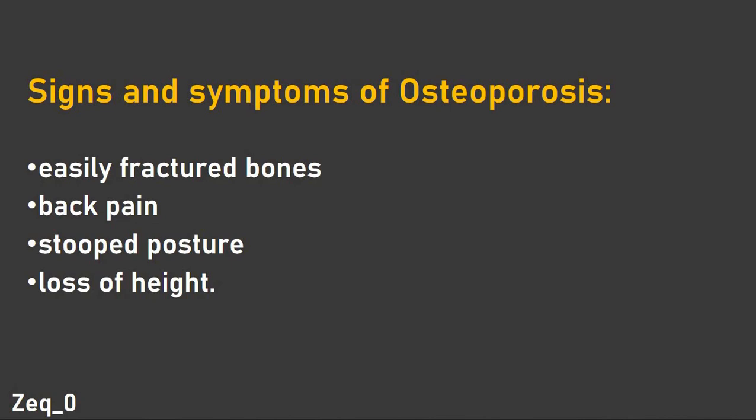Signs and symptoms of osteoporosis include easily fracturing of the bones. It might cause back pain because the bones of the back weaken. Also, stooped posture — the person might have wrong posture. And loss of height: because of the weakness of the bones, the person will start getting shorter as the bones cannot handle all the weight.